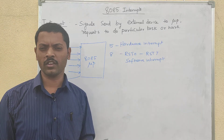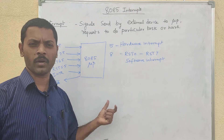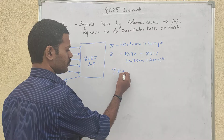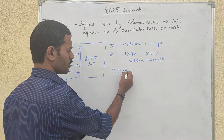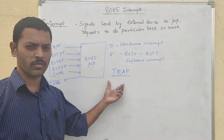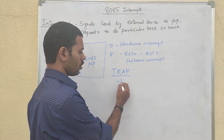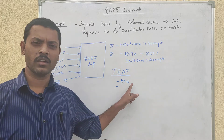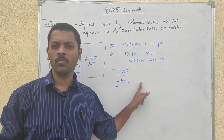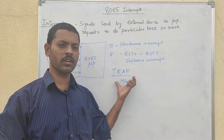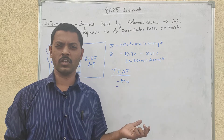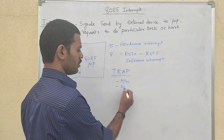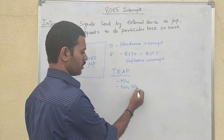Next, the non-maskable interrupt: the microprocessor cannot reject or delay it. Trap is the non-maskable interrupt in the 8085.